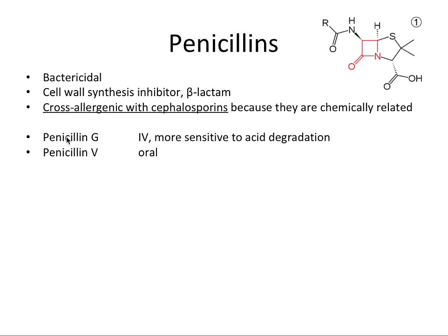Penicillin G is administered IV — intravascularly — because it's more sensitive to acid degradation. If taken orally, it would be rapidly broken down by stomach acids, so it has to be given IV. Penicillin V is taken orally because it's less sensitive to acid degradation. This is a critical fact: the V version is the oral one and the G version is the IV one — not the other way around.